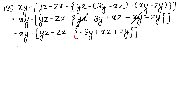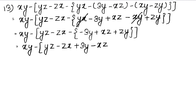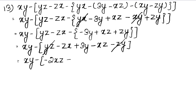Now we will open the curly bracket. The minus sign is outside, so the sign will change inside. YZ minus ZX remains as it is. Now, YZ is plus here and there is a minus there — so ZY or YZ cancel, being 1 plus and 1 minus. Looking at ZX or XZ, both are minus, so they add to give minus 2XZ. And plus 3Y remains as it is. Both minus signs add: 1 plus 1 is 2, giving minus 2XZ.